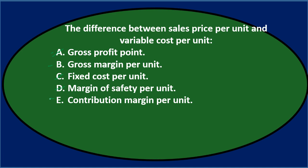Let's narrow it to B and E. The difference between sales price per unit and variable cost per unit is either the gross margin per unit or the contribution margin per unit. The difference between those two is that gross margin is a financial accounting term — sales minus cost of goods sold. Whereas contribution margin is a CVP analysis concept — sales minus variable cost, which is exactly what we're talking about here. Make sure we have the difference between per unit and total parsed out in our minds as well. Final answer: the difference between sales price per unit and variable cost per unit — E, contribution margin per unit.